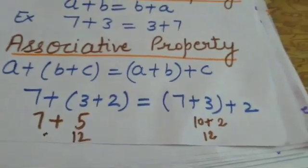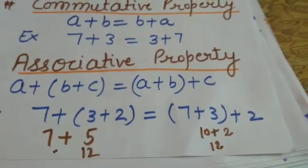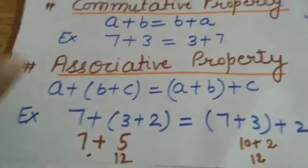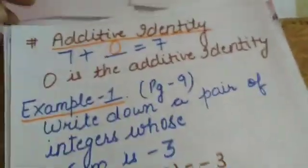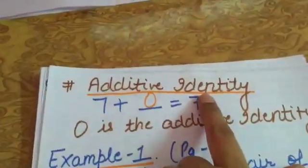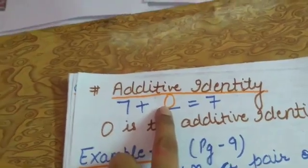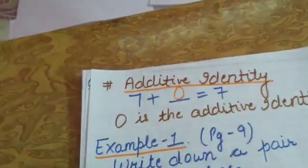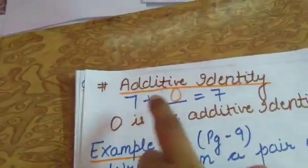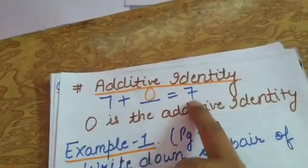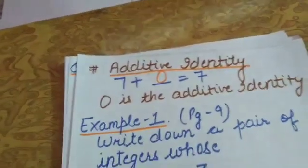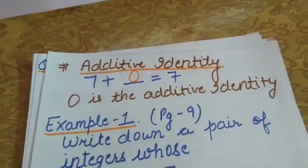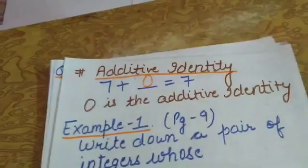This confirms a + (b + c) = (a + b) + c — our fourth property, associative. Now the next property is additive identity. Identity means same. By what number should an integer be added so that you get the same integer? That number is zero. If you add zero to 7 you get 7. Zero is the additive identity of all integers — adding zero to any integer gives you the same integer.